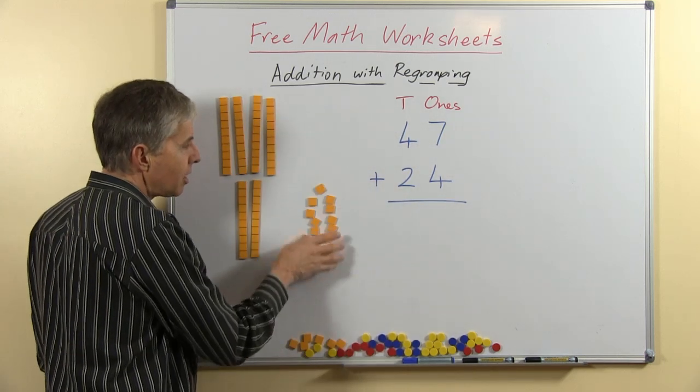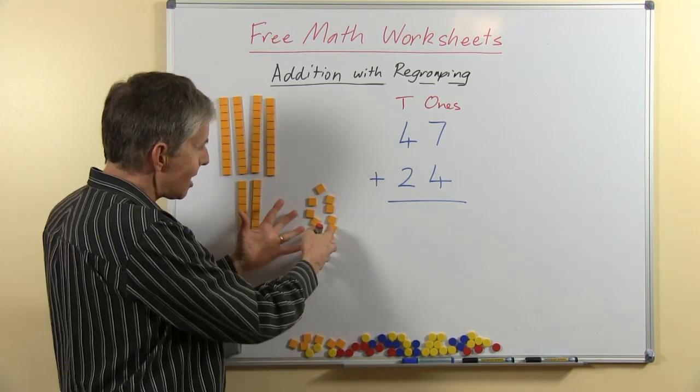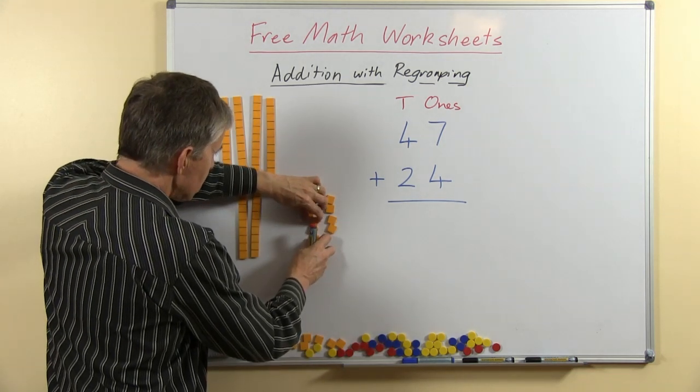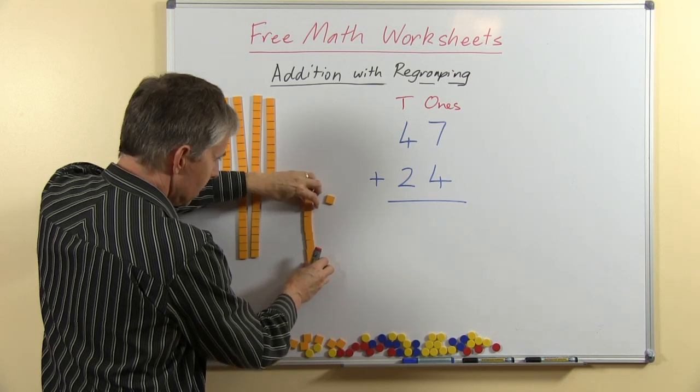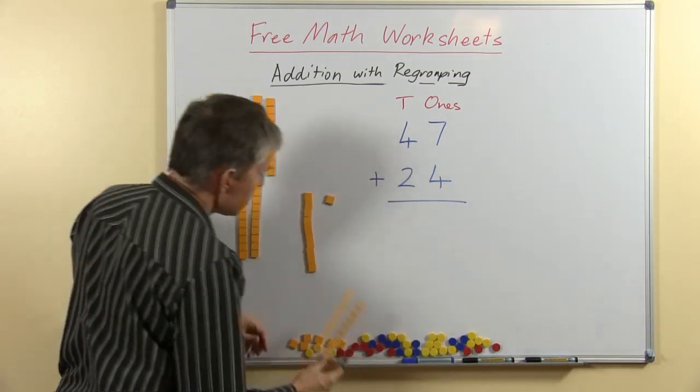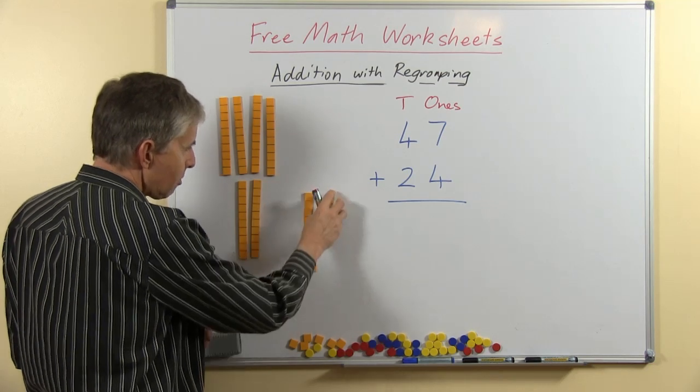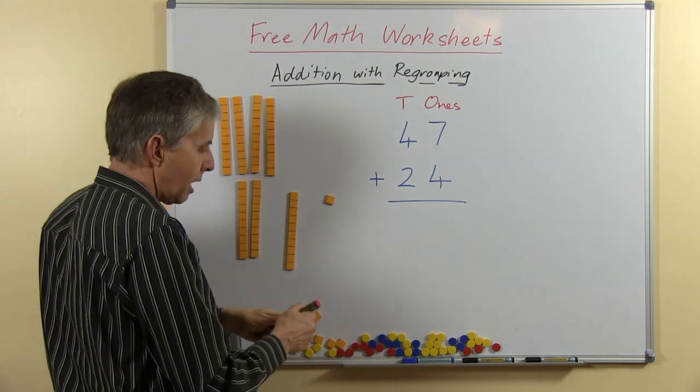So this is 11 here and we can count to make sure. The question we have to ask ourselves is, is that enough to make a group of 10? And of course it is because it's 11, so if I push these into a line, if I put 10 of them like that, you can see that that's the same as that. So I have 10 here plus another 1 and I'm going to trade those for a 10.